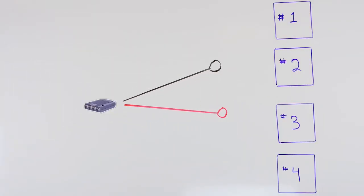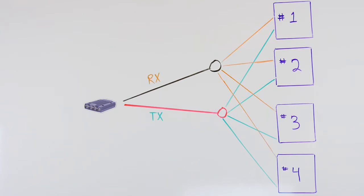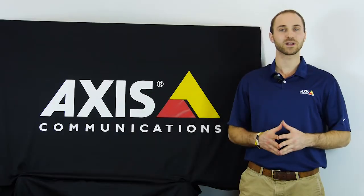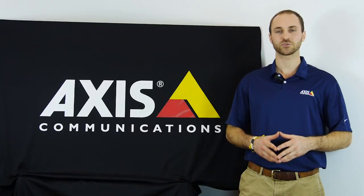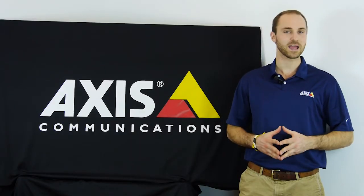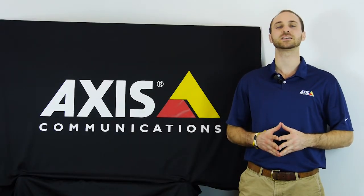The green or transmit cables will all terminate at one cable, while the green striped or receive cables will terminate at the other. And with that, we're now hardwired to control one or more analog PTZ cameras.